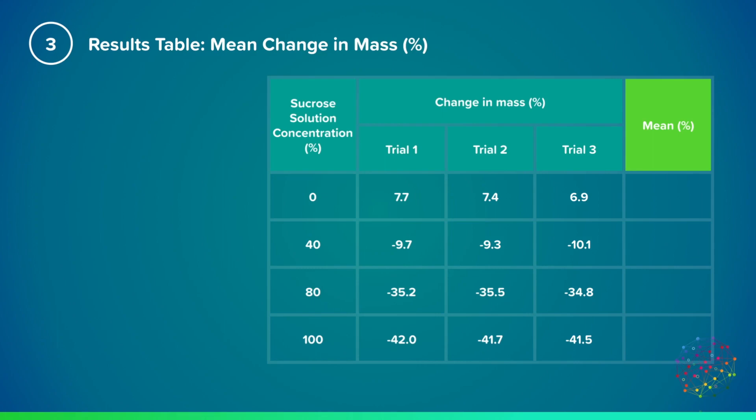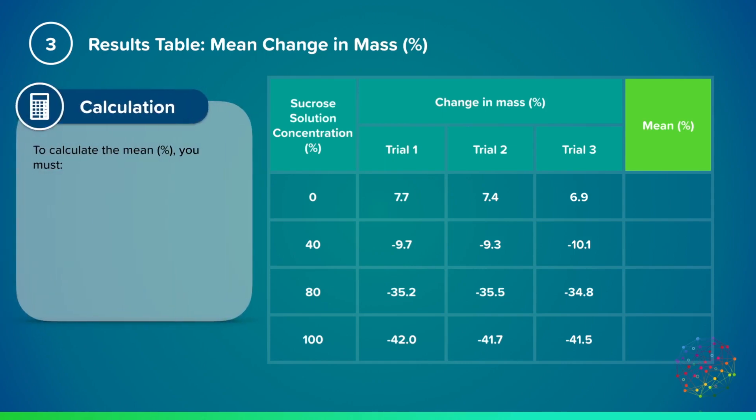Notice here that we have all of our results to one decimal place now, so we need to be consistent in using one decimal place to display our data. To calculate the mean change in mass percentage, we'll need to add up all of the measurements for a concentration and then divide by however many there are, so in this case three.